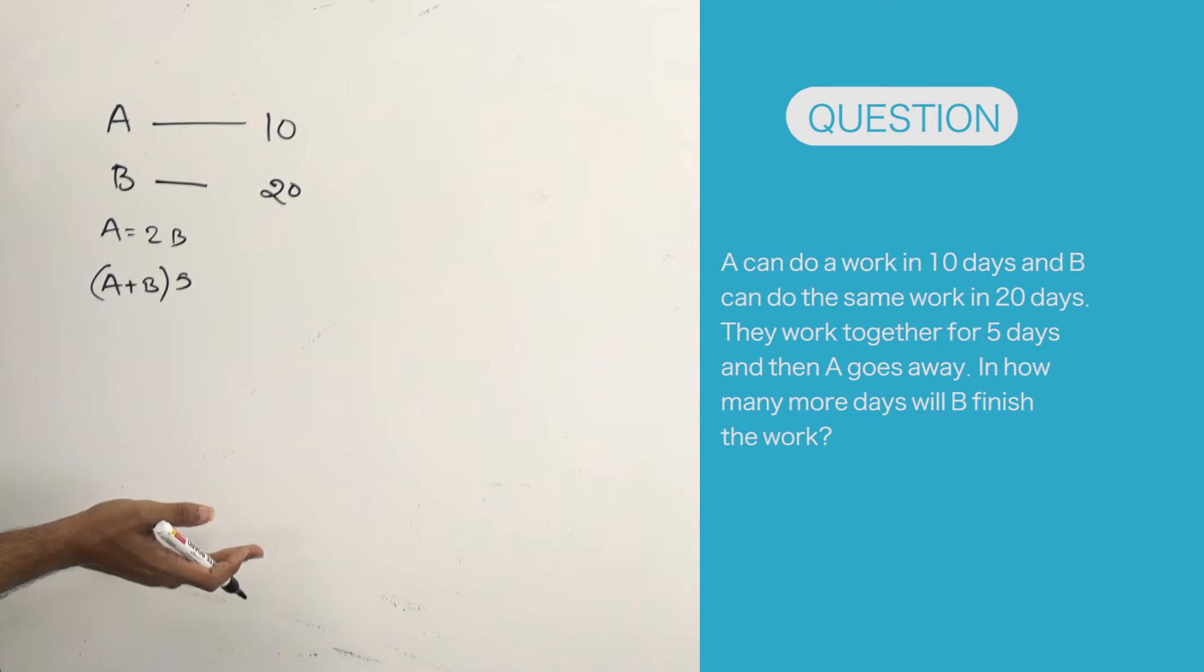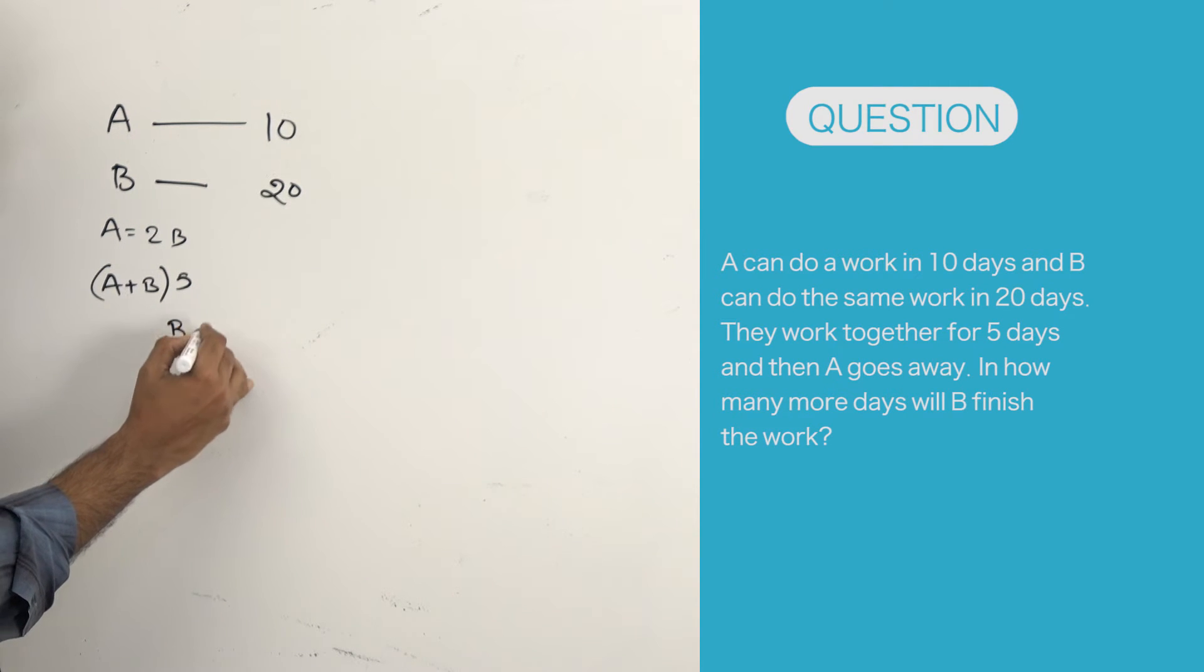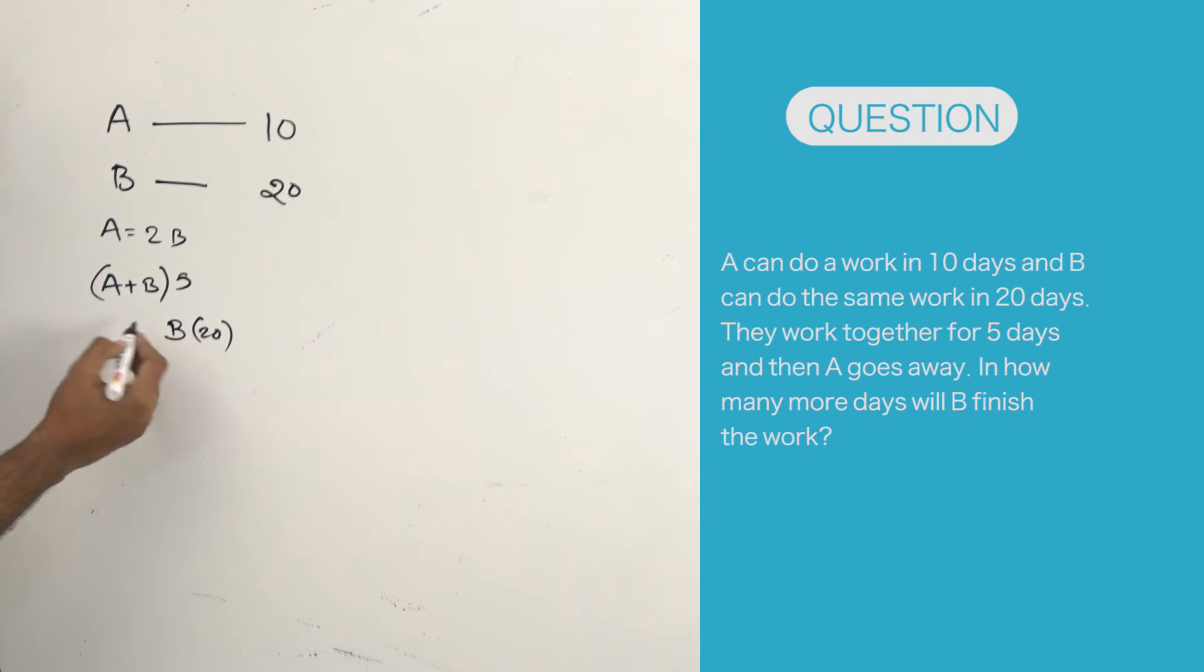This question can be answered just in 5 seconds if you use your common sense. Let's see, the total work of B is actually 20 days. B's total work is 20 days. They work together for 5 days. That is A worked for 5 days, B worked for 5 days.